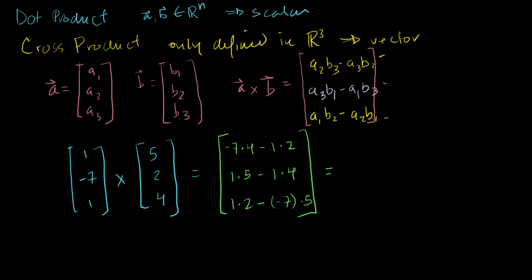And so that is equal to -7 times 4, that's -28 minus 2, so this is -30 for that first term. This one is 5 minus 4, so it's just 1. And then 2 minus -35, that's 2 plus 35, that's 37. So there you go. Hopefully you understand at least the mechanics of the cross product.